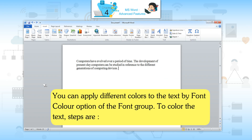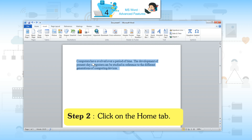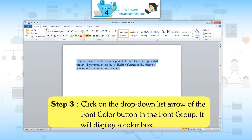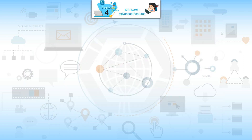Changing Font Color: you can apply different colors to text using the font color option of the Font group. Steps to color the text: Step 1 — select the text. Step 2 — click on the Home tab. Step 3 — click on the drop-down list arrow of the font color button in the Font group; it will display a color box. Step 4 — click on the color to apply it to your selected text.